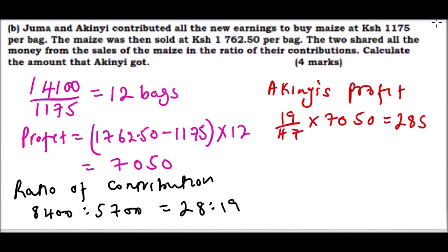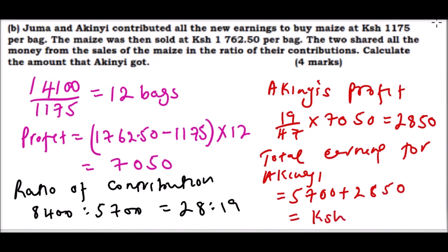Total earning for Akinyi would be her salary which was 5700, and then you add the profit that she got from the selling which is 2850. When you add that you get Kenyan shillings 8550.